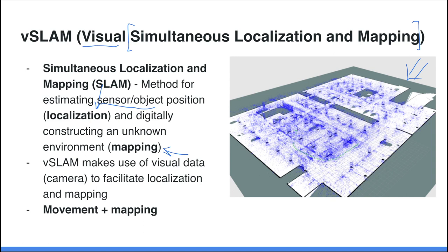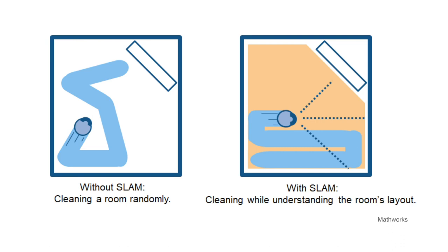In a nutshell, V-SLAM is about tracking movement and mapping an area using a camera affixed to a robot. For example, a Roomba without SLAM just goes wherever it wants. But with V-SLAM, the robot uses its camera to get an understanding of the room's layout and then strategically vacuum or clean that particular room.